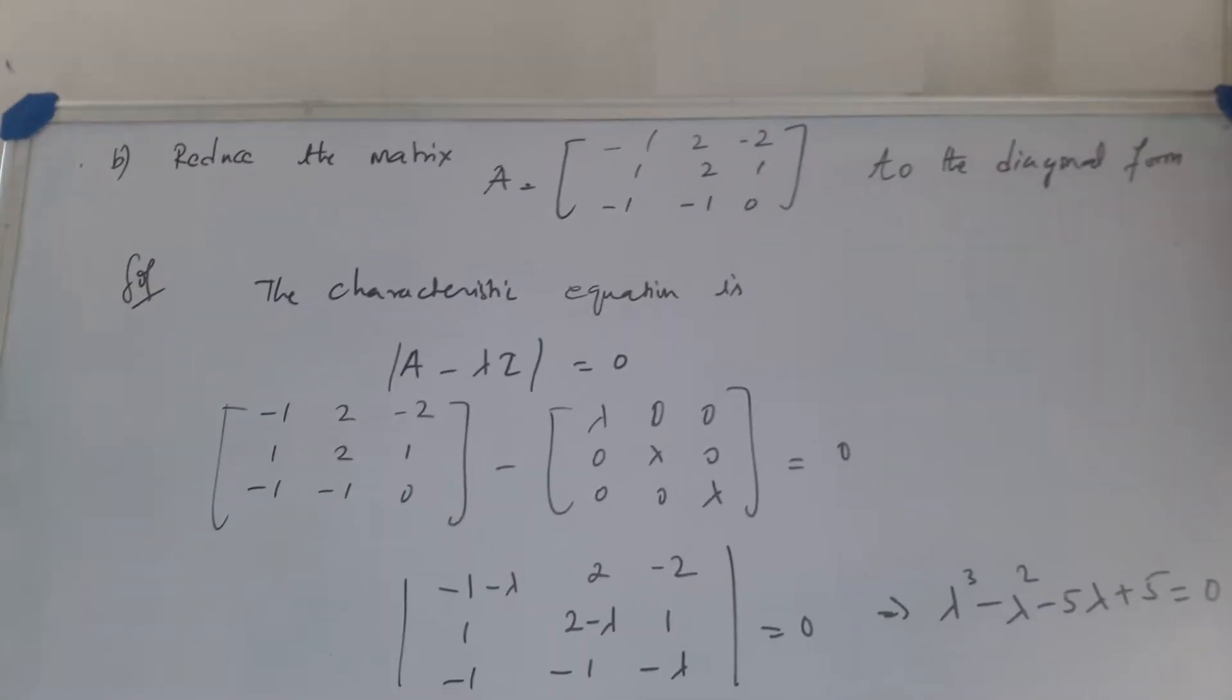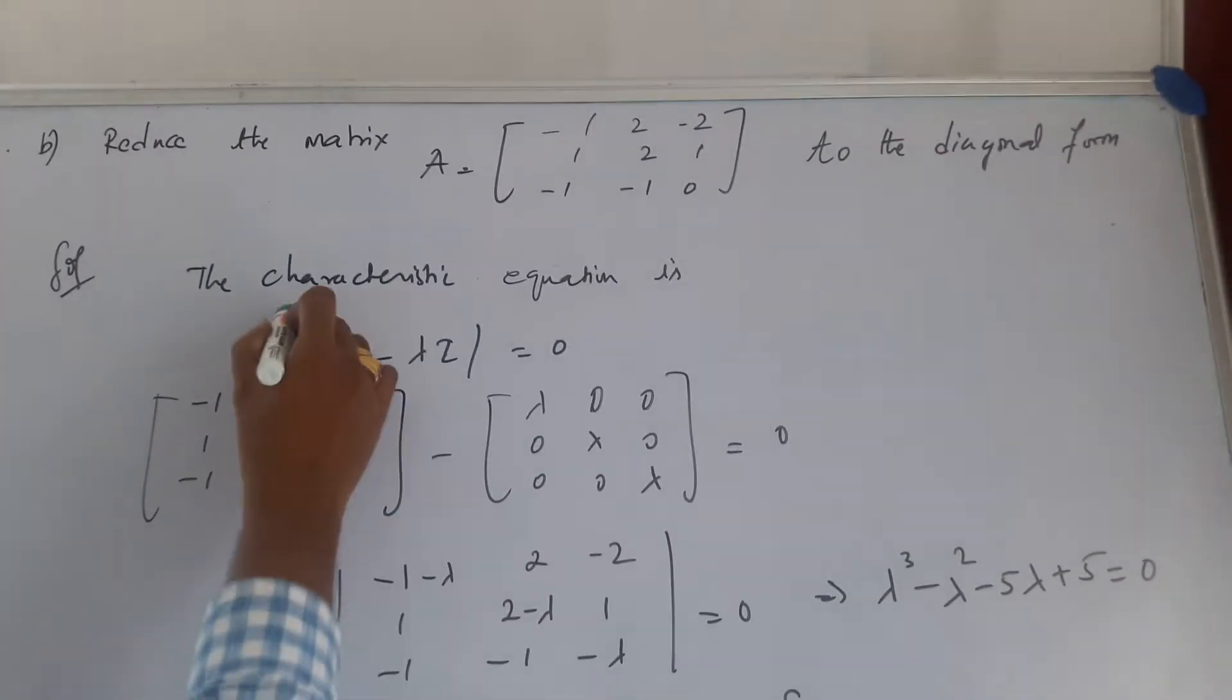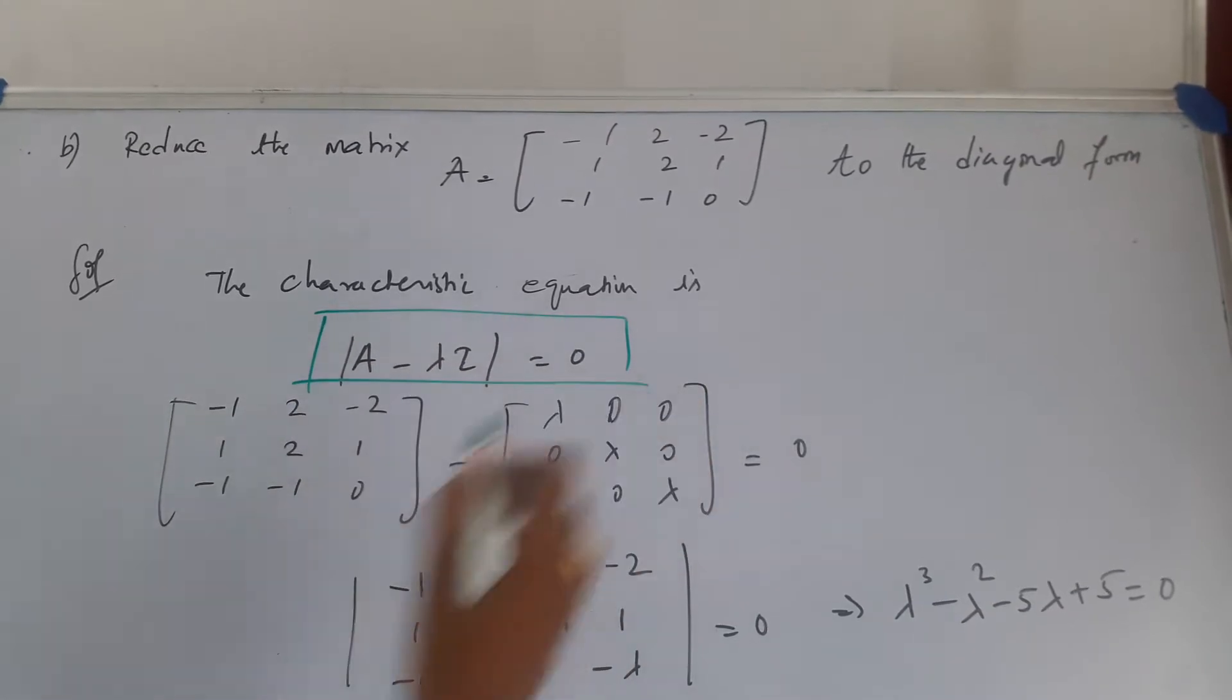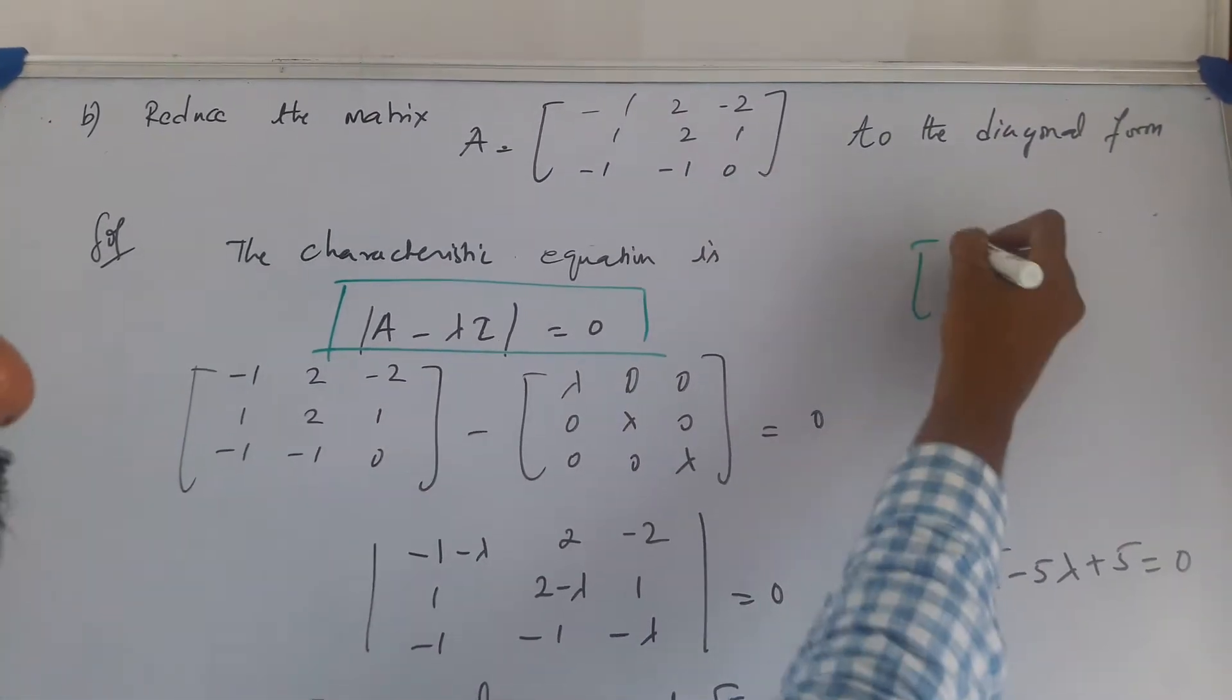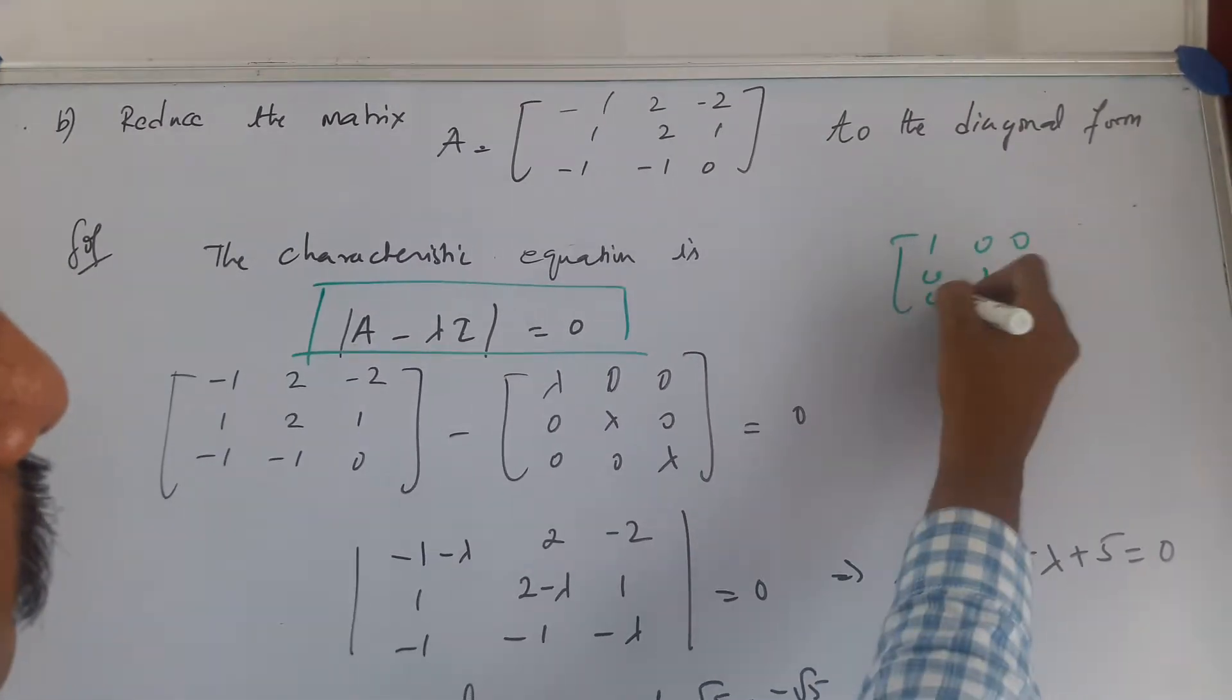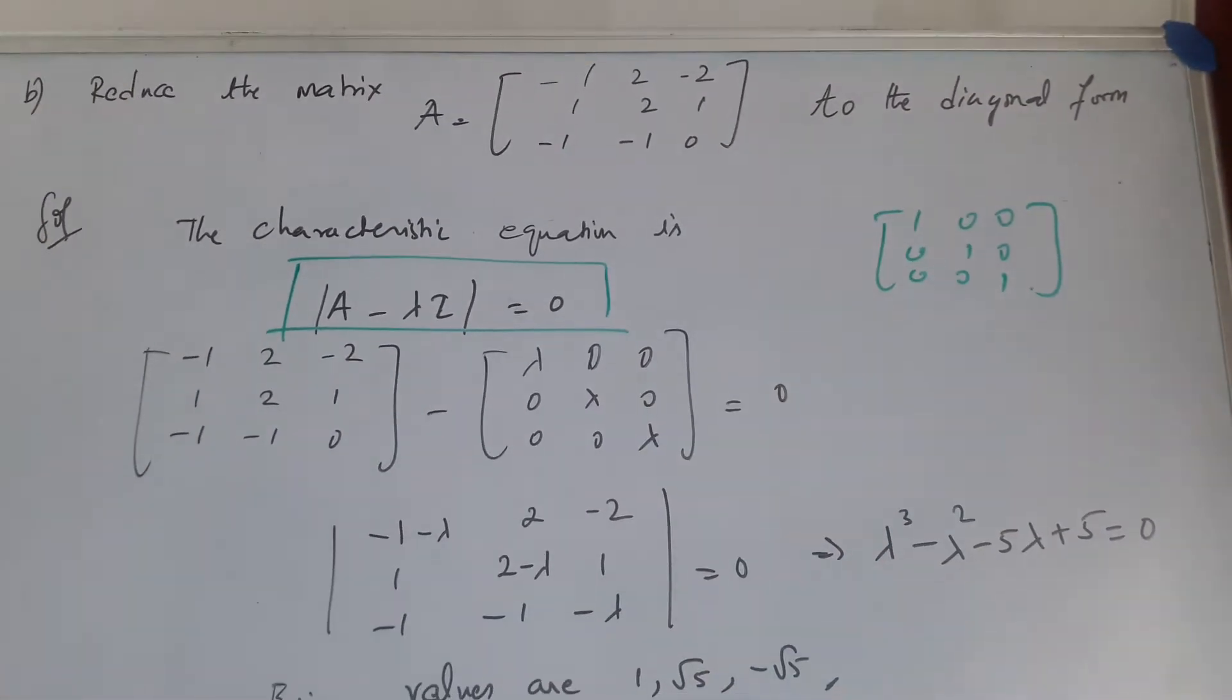The characteristic equation is mod of A minus lambda I. I can represent the identity matrix as 1, 0, 0, 0, 1, 0, 0, 0, 1. This is I.